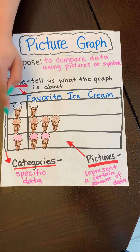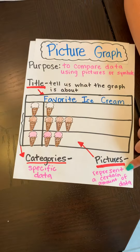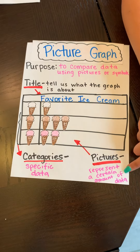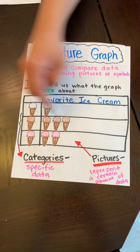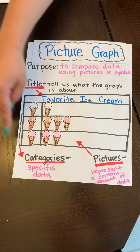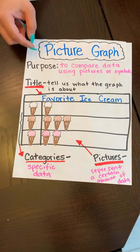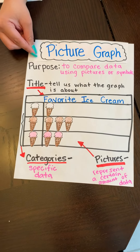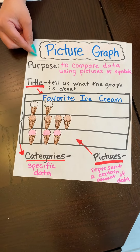So how many vanillas? Only one. How many chocolates? One, two, three. How many strawberries? One, two. And right here are the pictures — the pictures represent a certain amount of data.